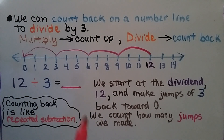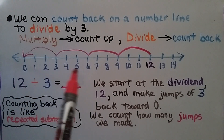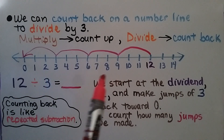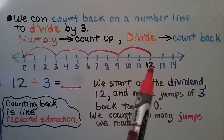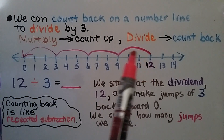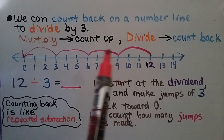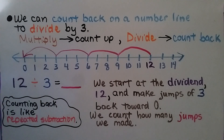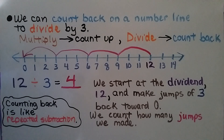We make sure the scale is correct for us to jump back. And we went back 3, then another 3, then another 3, and then another 3. We made 4 jumps. That means 12 divided by 3 is equal to 4.